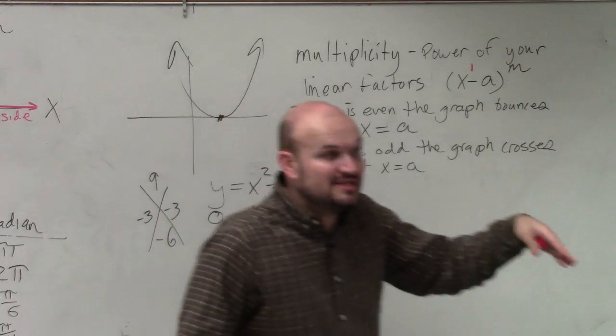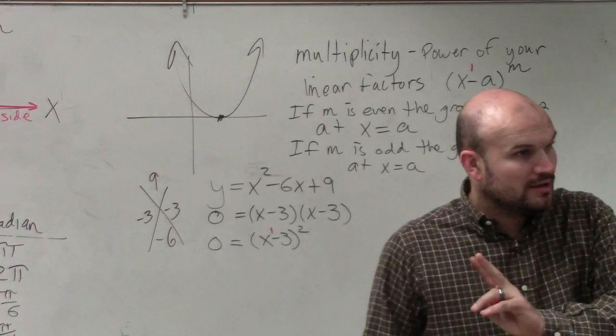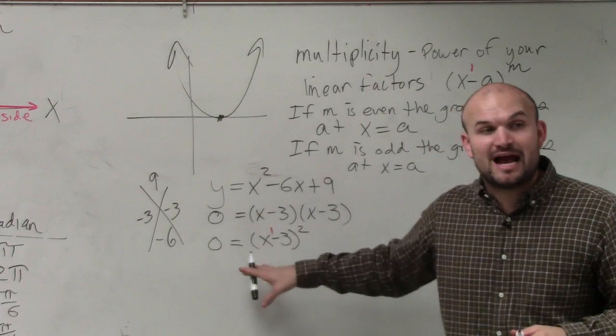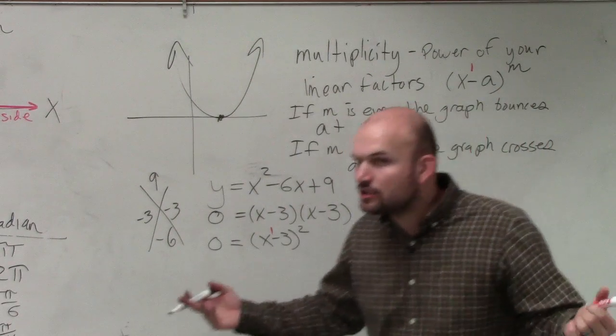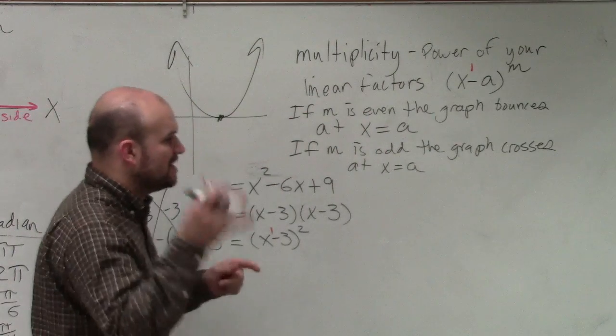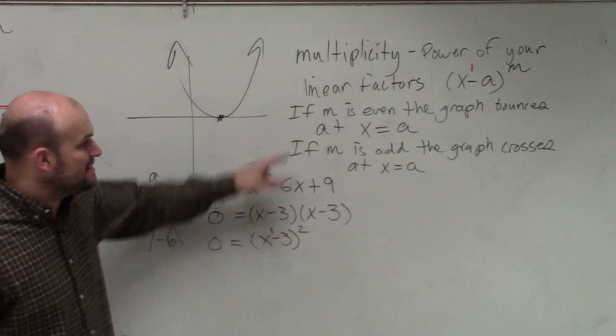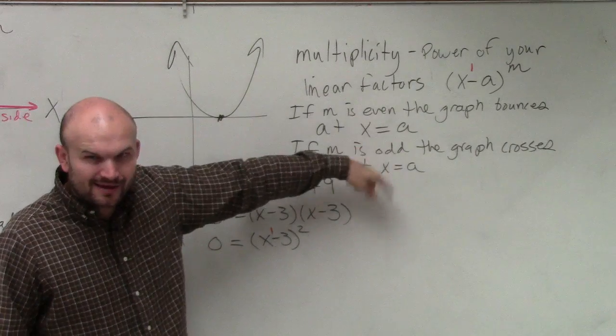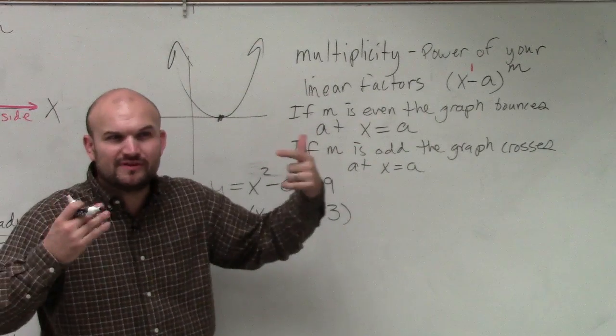So the multiplicity is 2. That means it's even. That means that tells me this graph crosses. But where does it cross? Well, I'm sorry, bounces. But where does it bounce? It says it bounces at x equals a. Well, how do we know that? How do we figure that out?